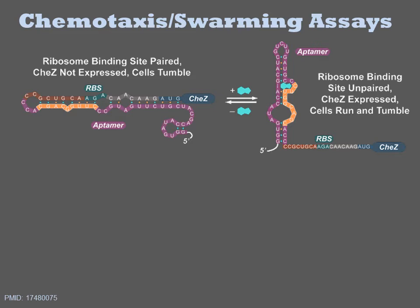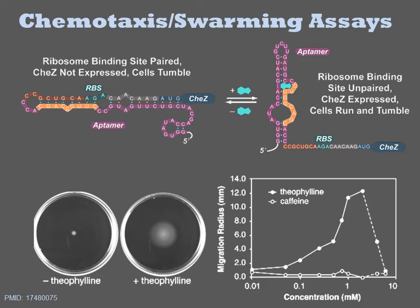Beyond growth, there are other processes that organisms do that can be monitored to observe the behavior of a cellular process. Here we look at chemotaxis using a swarming assay. Agar medium is prepared with only a small amount of agar, resulting in very soft petri dishes. A small spot of bacteria is placed in the middle of the dish and then incubated for several hours. If the bacteria have intact chemotaxis processes, they will swim outwards from the center of the plate forming a cloudy circle, and the diameter of this circle is an indirect measure of functionality.